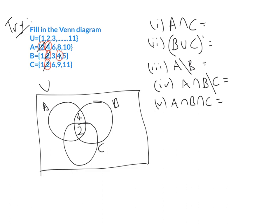Then I look at B intersection C — they have a one in common, nothing else, so one goes there. Then A intersection C — they have a six, nothing else, so six goes in there and I cross it off. Then I fill out the rest of A, which is eight and ten; the rest of B, which is three and five; and the rest of C, which is nine and eleven. I check there's no overlap of numbers — I think I'm okay. Now checking the universe from one to eleven: one, two, three, four, five, six — no seven — eight, nine, ten, and eleven. So seven is the only number I need to put into the universe outside the circles.